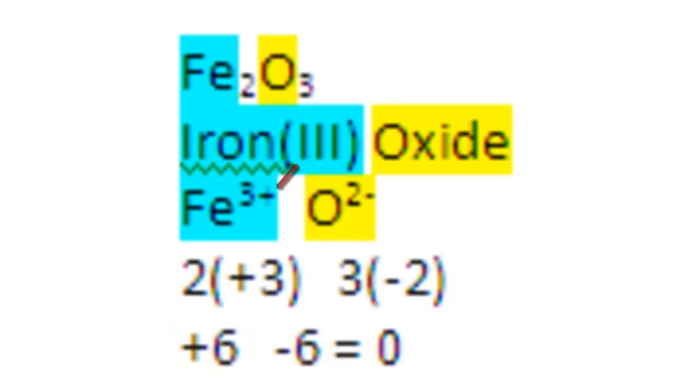Here's Fe2O3. Approach it the same way. Oxide is negative 2. There's 3 oxides, so the total charge contribution from the anion is negative 6.